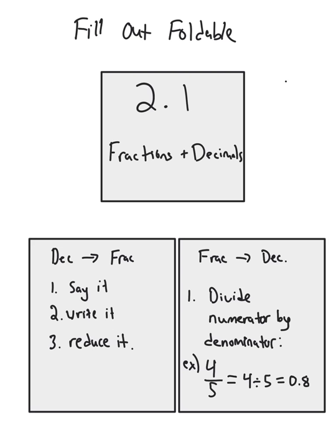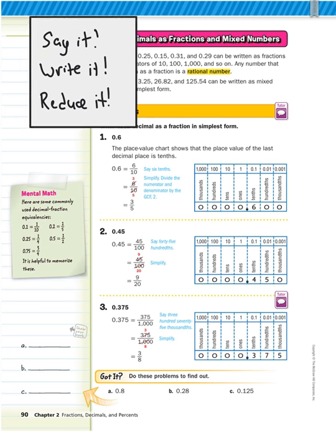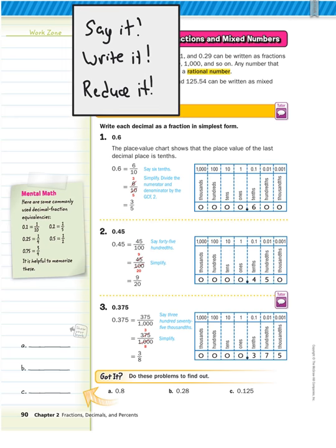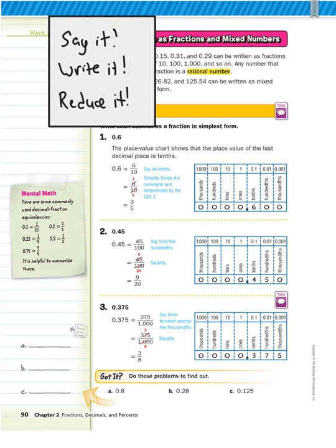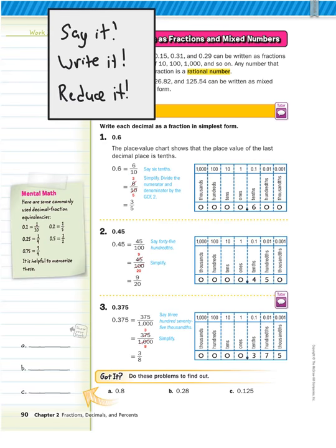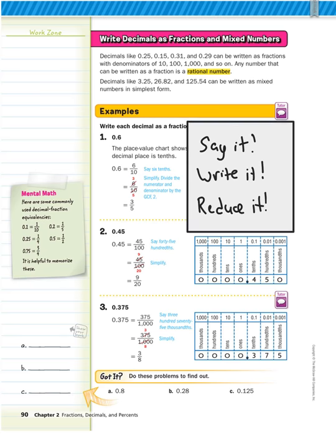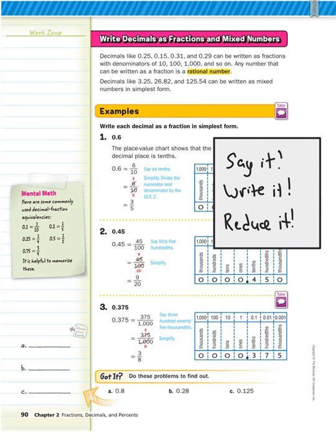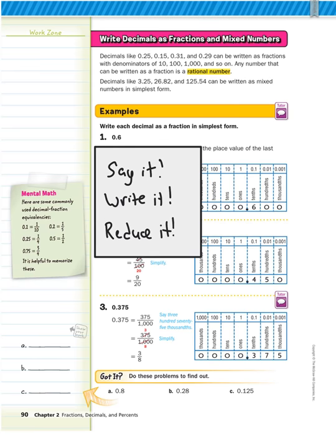Alright. I'm assuming you have your foldable filled out because you need it as we go on. If you don't, pause the video right now and get it filled out. On this first page, we are on page 90, so make sure you are on page 90. I want you doing everything with me. We are going to be changing decimals to fractions. In this box are the three steps you wrote in your foldable. Remember, you can use a calculator in this entire lesson. Let's start looking at example one.